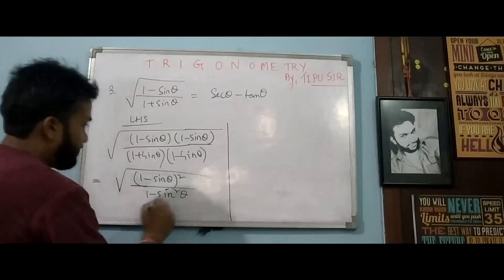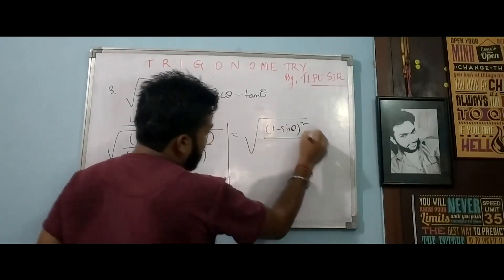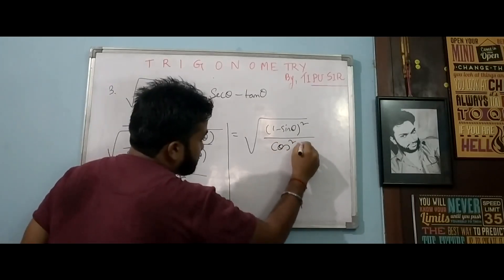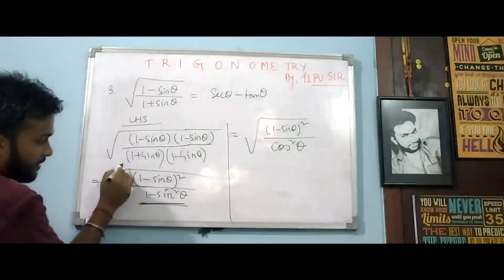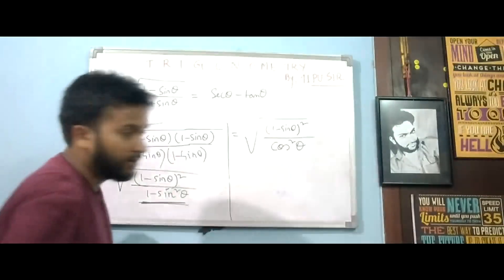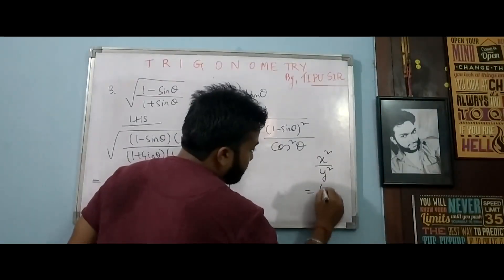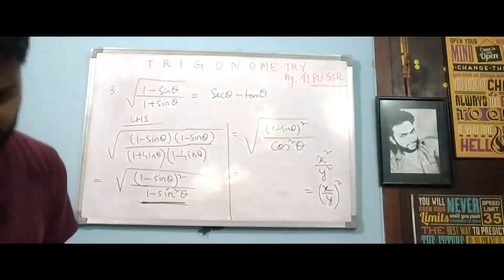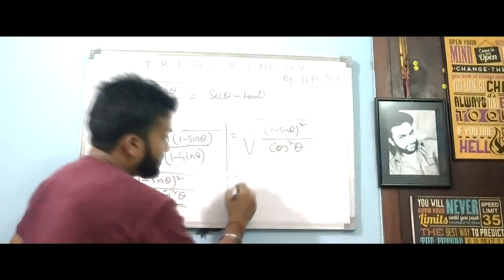So we have (1 − sin theta)² / cos²θ. Since we have a square in both numerator and denominator, we can write this as [(1 − sin theta) / cos theta] whole square. Both are under the same bracket with the whole square.